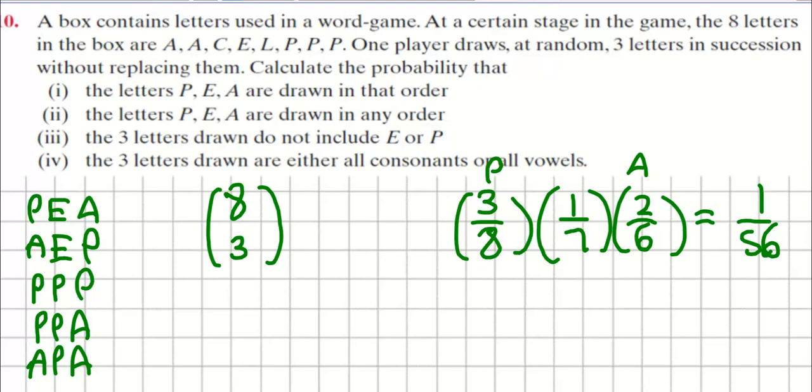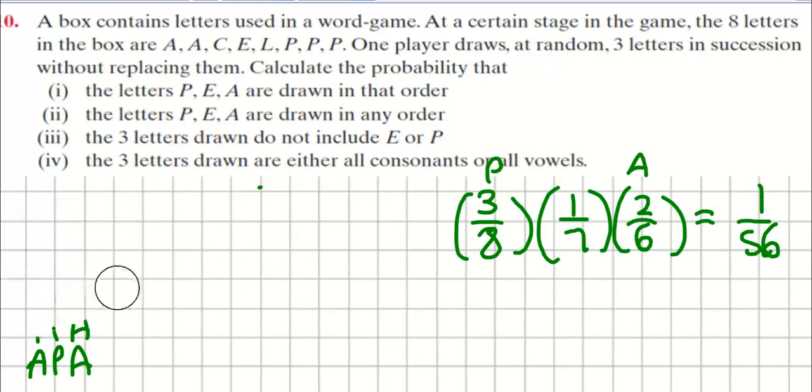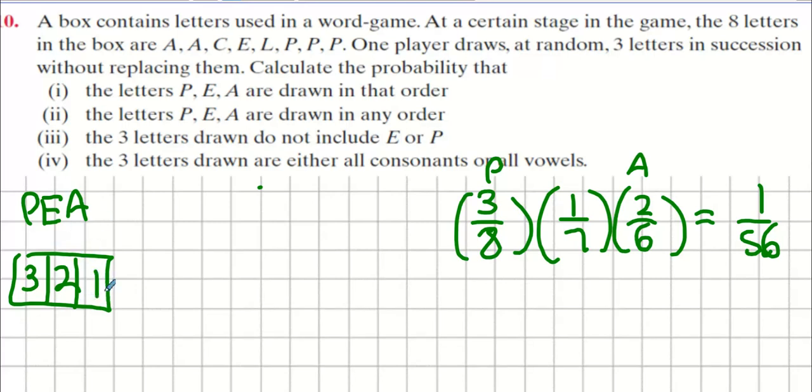Next one. P, E, A in any order. Let's have a look at this. I could draw down a couple of different orders, couldn't I? I could choose P, E, or A to go first. What could I choose to go second? Two of them. And the third one? One.